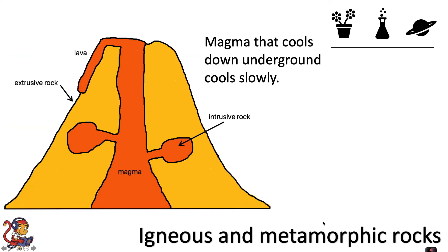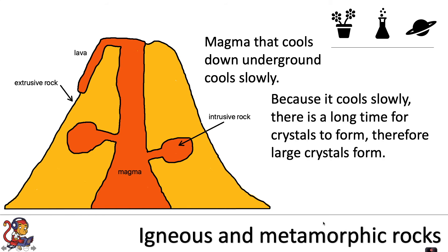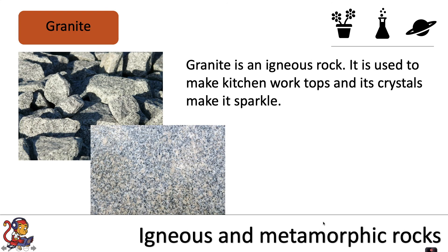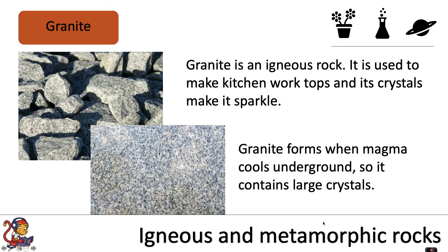Magma that cools down underground cools slowly. Because it cools slowly, there is a long time for crystals to form, and therefore large crystals form. Granite is an igneous rock used to make kitchen worktops, and its crystals make it sparkle. Granite forms when magma cools underground, so it contains large crystals.